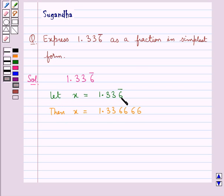Now here since we have that there is a bar on the digit 6, the 6 repeats itself. So we write x is equal to 1.336666.